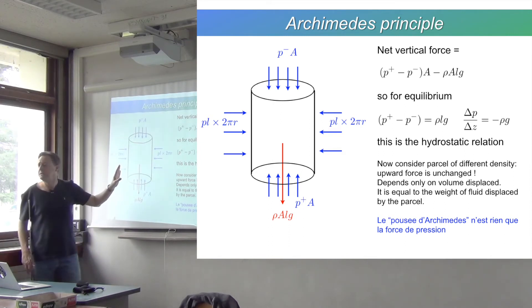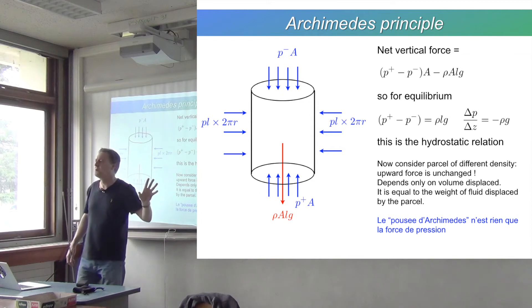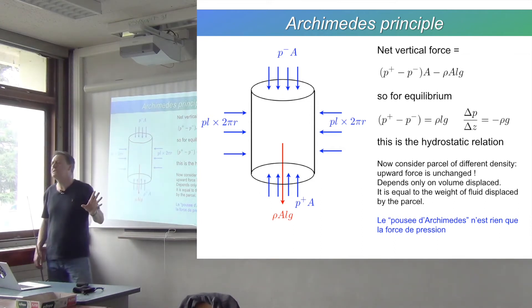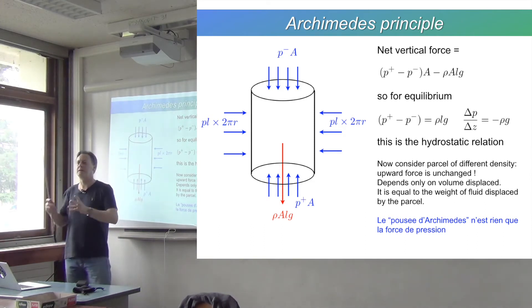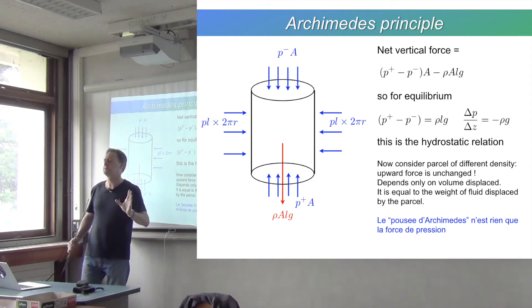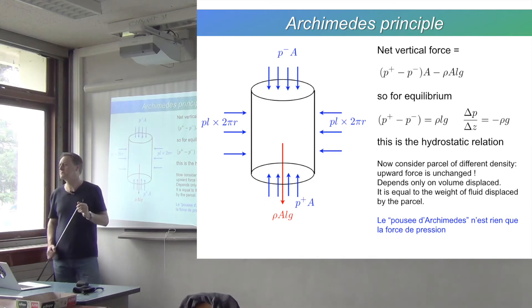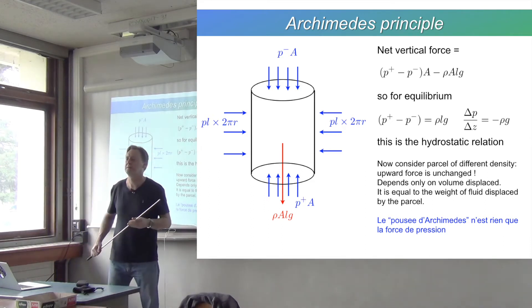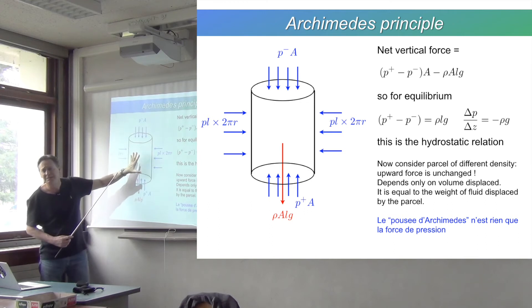This is how Archimedes figured out the density of gold. The king of Greece wanted to know if his crown was made out of pure gold or somebody was cheating him. Archimedes thought about it and decided to put the crown in water. This thought came to him in the bath because he got into the bath and realized he was displacing water. He was so excited he ran around the streets naked saying eureka. This is a famous story.